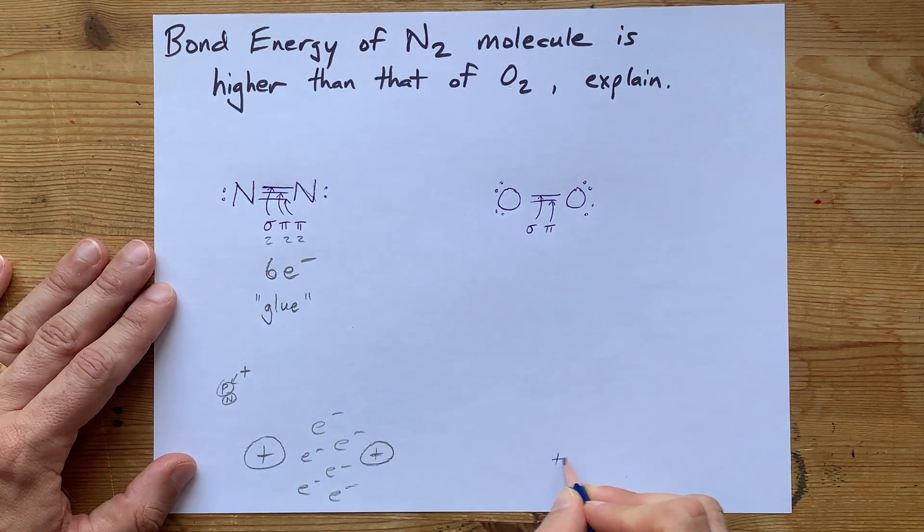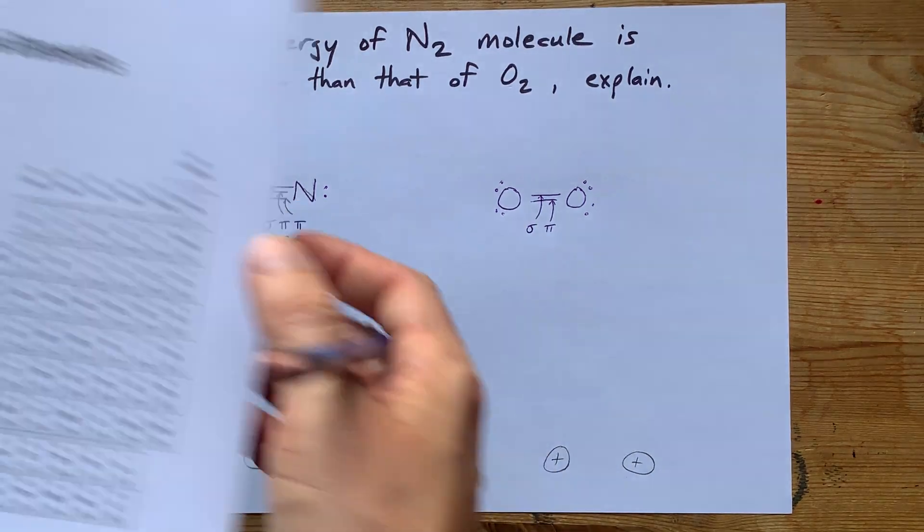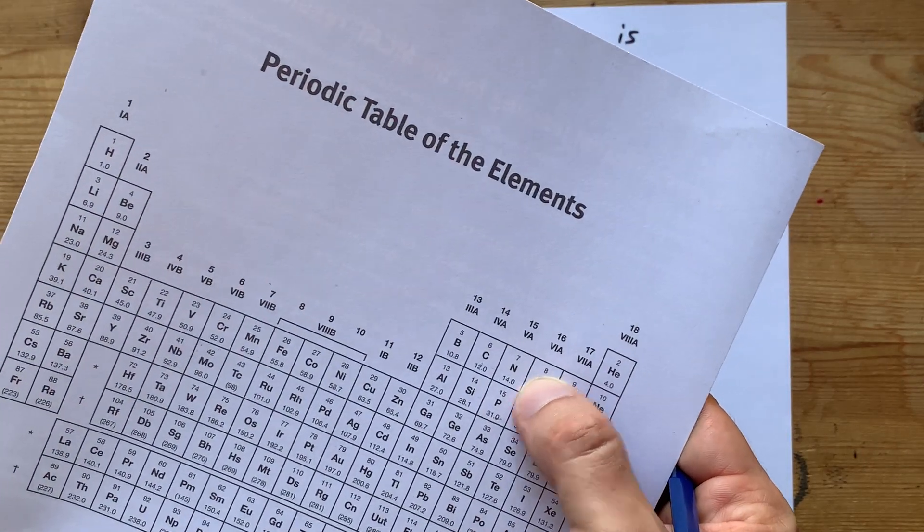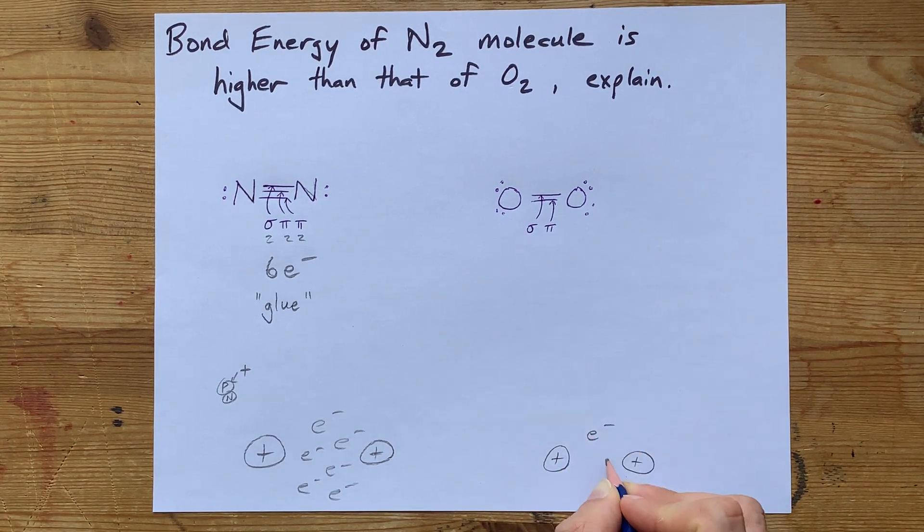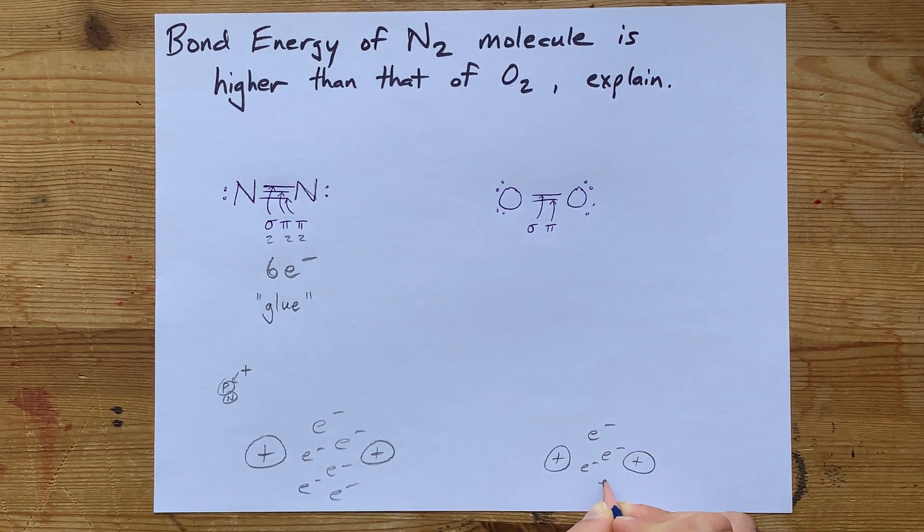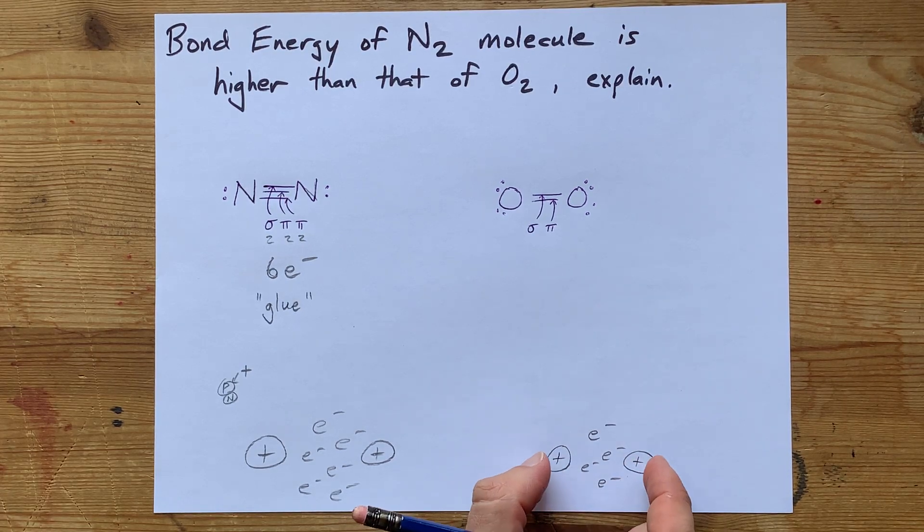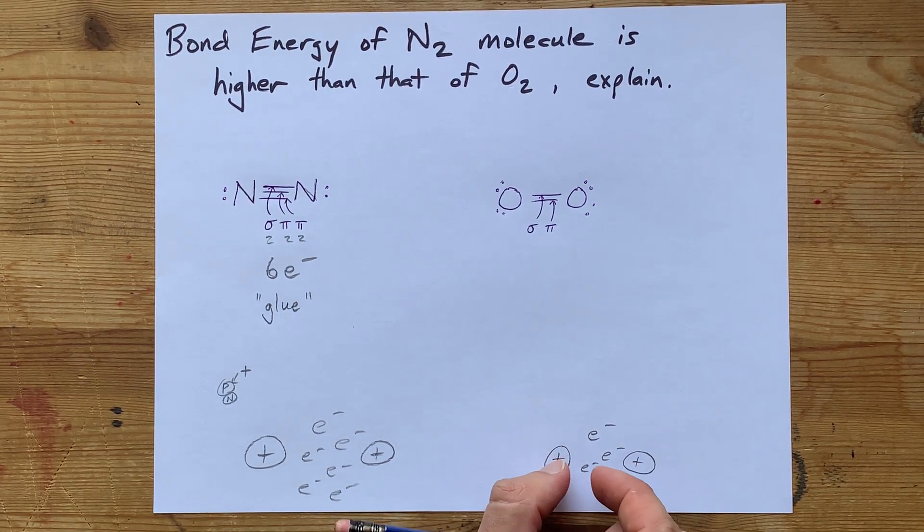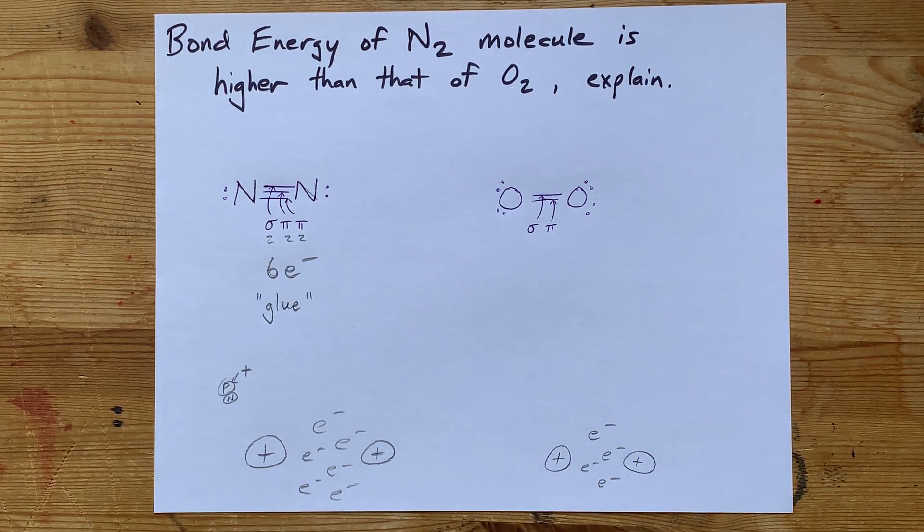Same with the oxygens. You'll have two nuclei—those nuclei, by the way, have an extra positive charge compared to the nuclei of nitrogen—but then you're only going to have four electrons worth of stickiness to pull those positively charged nuclei, which repel each other, together and keep them attached inside of a bond.